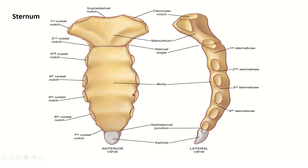Looking at the anterior view of the sternum, we can see the manubrium with the suprasternal notch and the notch for the clavicle. The first costal notch is fully within the manubrium, and the second costal notch is split — half with the manubrium and half with the body. The 3rd, 4th, 5th, and 6th costal notches are on the body of the sternum. The 7th notch is again half in the body and half in the xiphoid process. The sternum develops from sternebrae, with 4 sternebrae contributing to its formation.